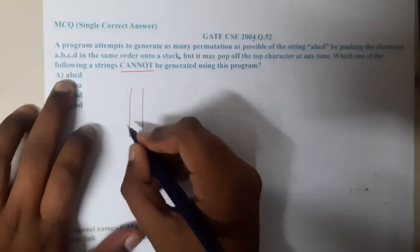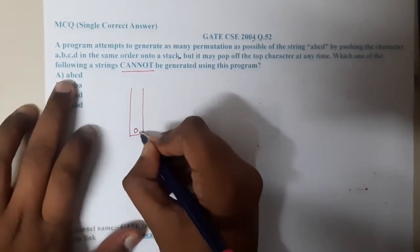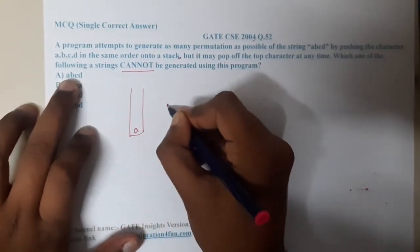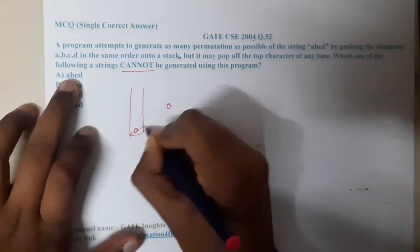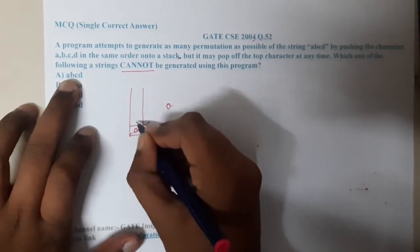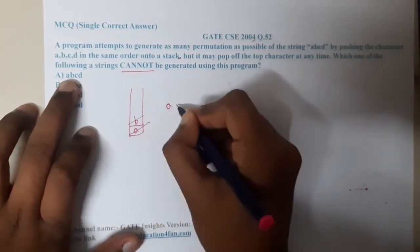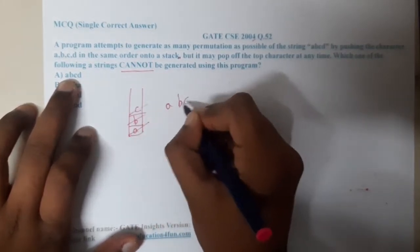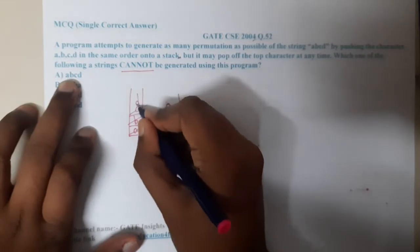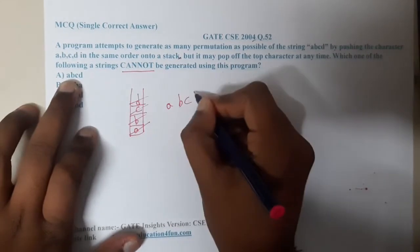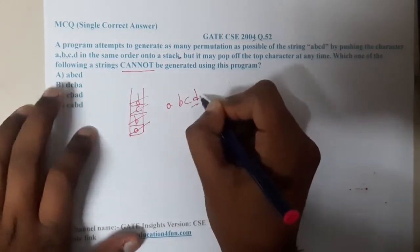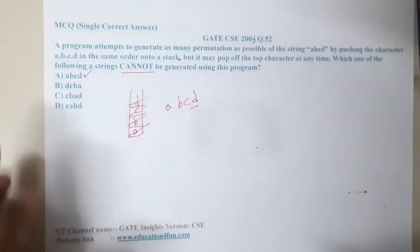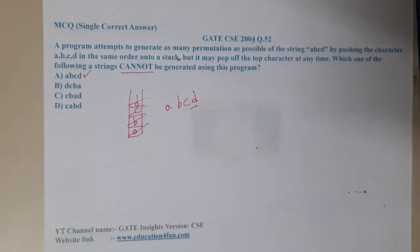For option A: I push a and pop it immediately, push b and pop b immediately, push c and pop c immediately, push d and pop d immediately. So I got the sequence a, b, c, d — this sequence is correct.